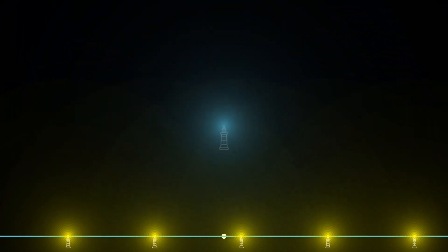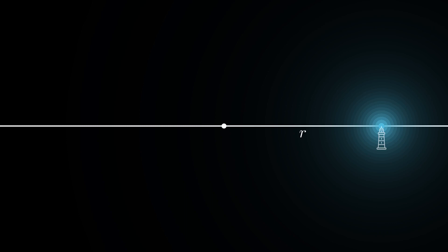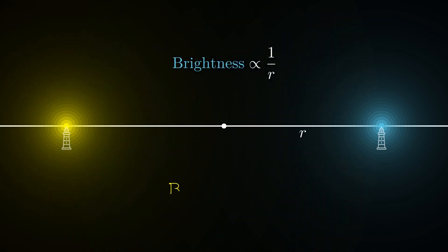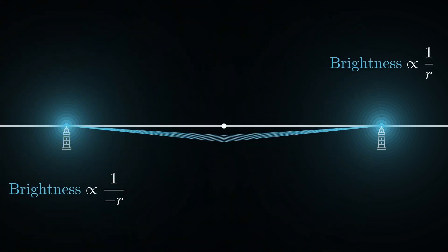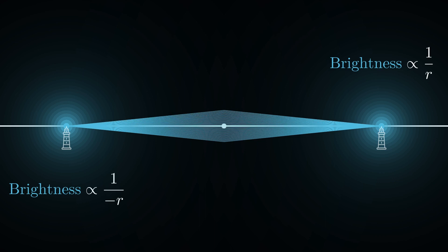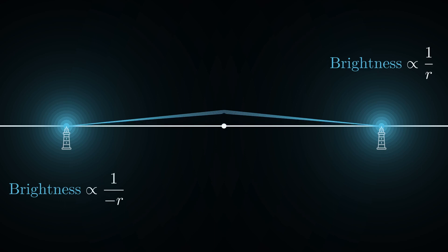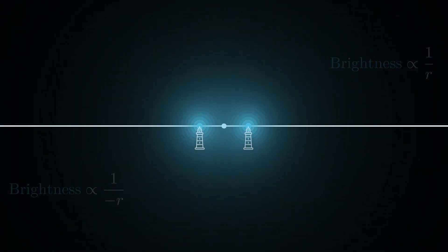We now have a very general result about the Basel problem, but to make something even more amazing, we introduce a new type of lighthouse. Think of an observer at the origin of the x-axis plane with a lighthouse at the point r, 0. What's unique about these bizarre blue lighthouses is that the apparent brightness to the observer is inversely proportional to the signed distance between them — not the inverse square of the distance. As a consequence, if the lighthouse is to the left of the observer, it casts a sort of negative brightness on the observer.